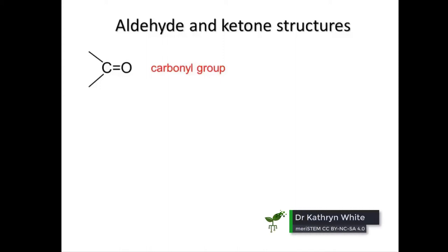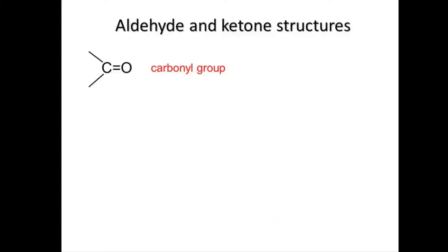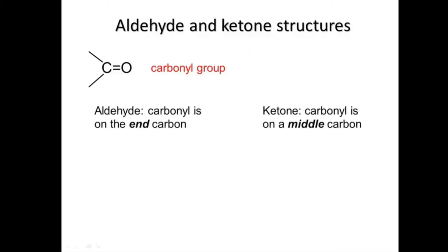As you're already aware, the group of atoms that is the distinctive feature of aldehydes and ketones is the carbonyl group — a carbon atom with an oxygen double bonded to it. In an aldehyde, this group is on an end carbon, while in a ketone it's in the middle of the molecule, surrounded by other carbons.